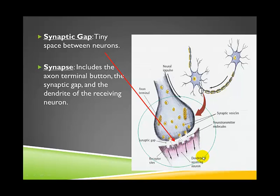Your textbook actually has an error in that it refers to the synapse as just the gap between the neurons, but that is not the case. The synapse is all of these structures taken together. This is why we call communication between neurons synaptic communication — because it involves all of these structures, not just the gap.